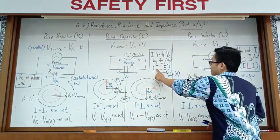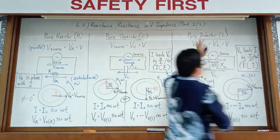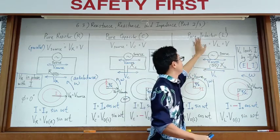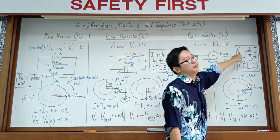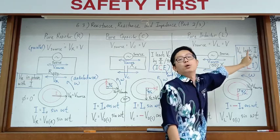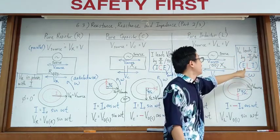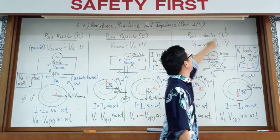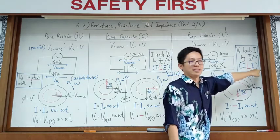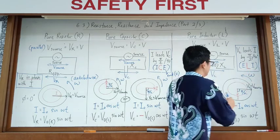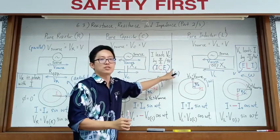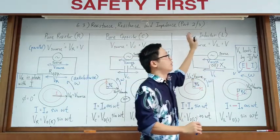For an inductor, V_source equals V_L equals V. For an inductor, voltage is in front — voltage leads current by π/2 radians. The acronym is ELI — E is EMF or voltage, L stands for inductor, and I is current. So E leads I, meaning voltage leads current. For capacitor: current leads voltage. For inductor: voltage leads current.